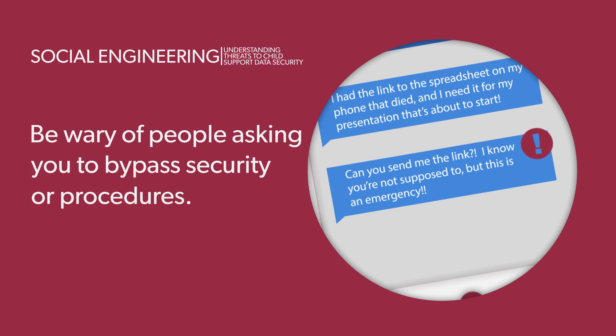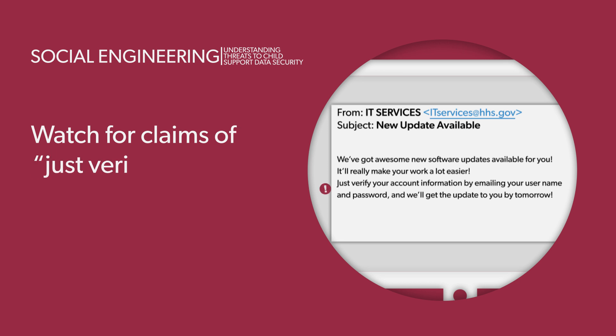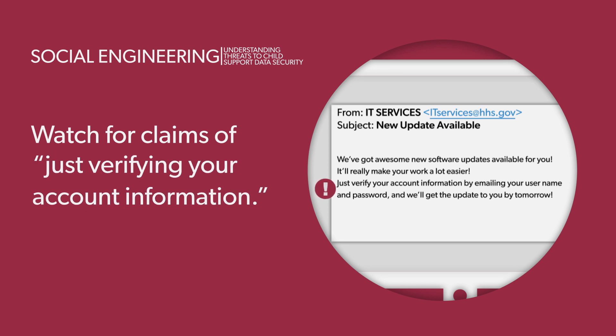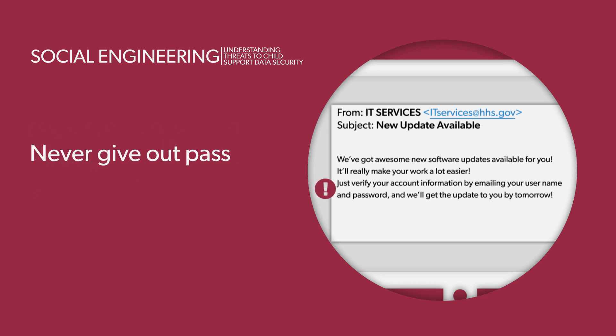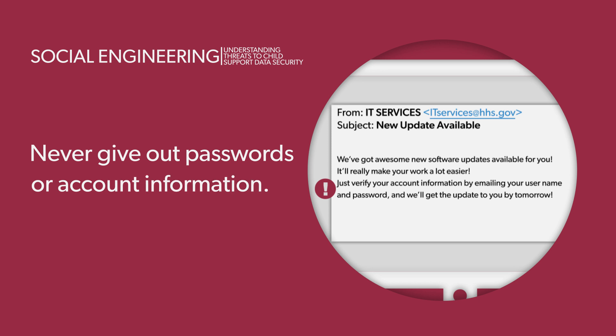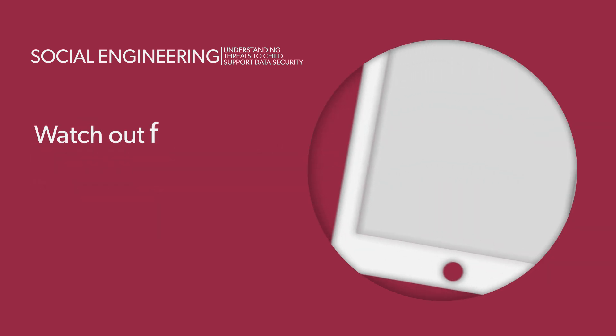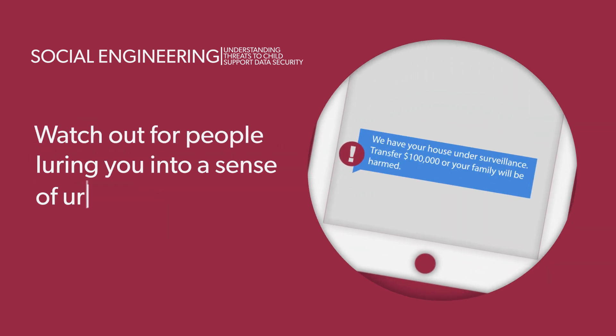To protect yourself from social engineers: be wary of people asking you to bypass security or procedures. Watch for claims of 'just verifying your account information.' Never give out passwords or account information. Look out for people using tricks or deception to create a sense of urgency or danger — for example, 'if you do not act, we need the money or the person will be harmed.'